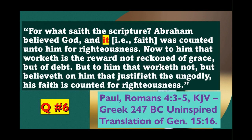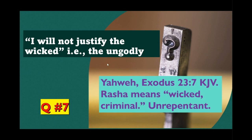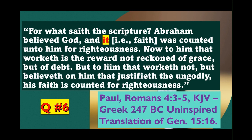Question seven: 'I will not justify the wicked or the ungodly.' Did Paul say that, did Jesus say that, or did Yahweh say this? The answer is Yahweh, in Exodus 23 verse 7. The word for 'wicked' there is 'rasha,' meaning wicked, criminal, or someone essentially unrepentant and ungodly. This is important because comparing verses, Paul said God justifies the ungodly in Romans 4:3–5, while Yahweh here says the opposite.